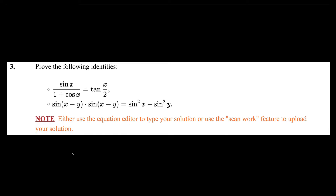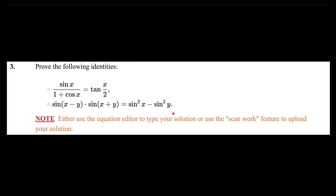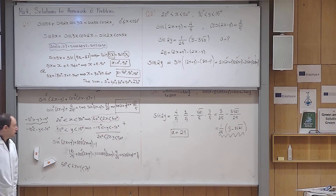We go to the next problem. This is a standard one — even some Swedish books have them. Prove the following identities: sine x over (1 + cosine x) equals tangent(x/2), and sine(x−y)·sine(x+y) equals sine²x minus sine²y. It is a very nice formula — it looks like a conjugate rule.